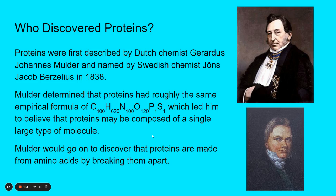Let's shift to talk about who discovered proteins. They were first described by the Dutch chemist Gerardus Johan Mulder, and they were named by the Swedish chemist Jans Jacob Brezelius in 1838. So we've known about proteins for a while — we figured out what they were in the mid-19th century. Mulder determined that these proteins all had roughly the same empirical formula of C400, H620, N100, O120, P1, S1, which led him to believe that proteins may be composed of a single large type of molecule, which isn't right, but is kind of on the right track.